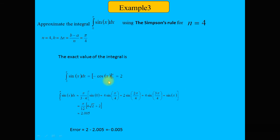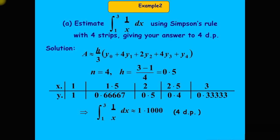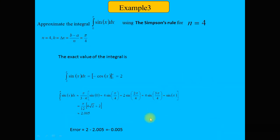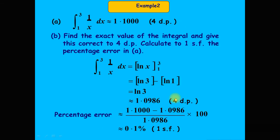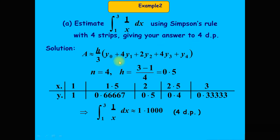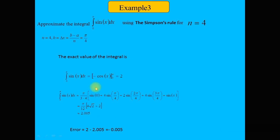Using Simpson's rule, the first value of x is 0. Adding the step size π/4 each time gives the x-values: 0, π/4, 2π/4, 3π/4, and π. A table is constructed from y₀ to y₄ by substituting each x-value into y = sin(x). Putting x = 0 gives y₀ = sin(0), then x = π/4 gives y₁ = sin(π/4).